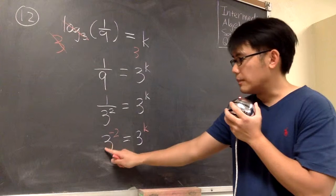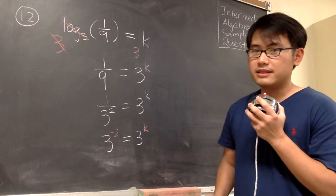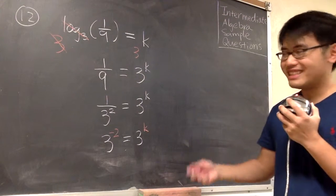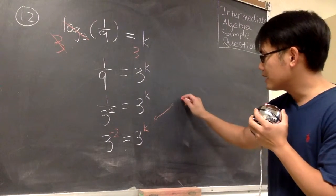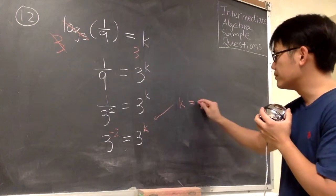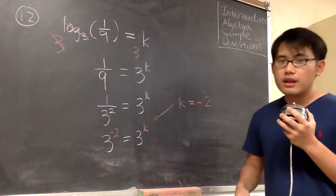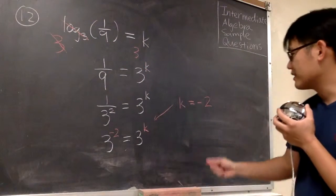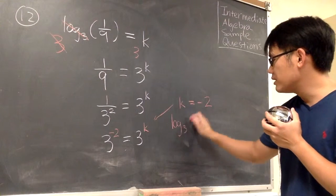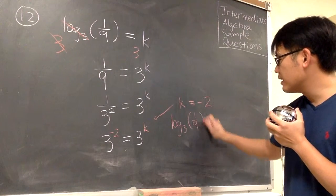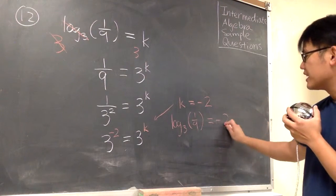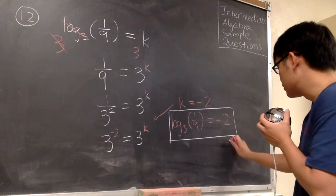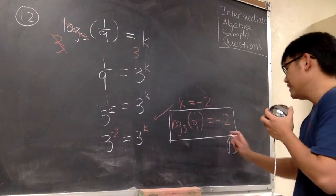As you can see, on both sides they both have 3 as the base. The power on the left is negative 2, and the power on the right is k. That means k must be equal to negative 2. Referring back to the original, k is exactly what we are trying to find — k is log base 3 of 1 over 9. So log base 3 of 1 over 9 equals negative 2, and this is answer choice A.